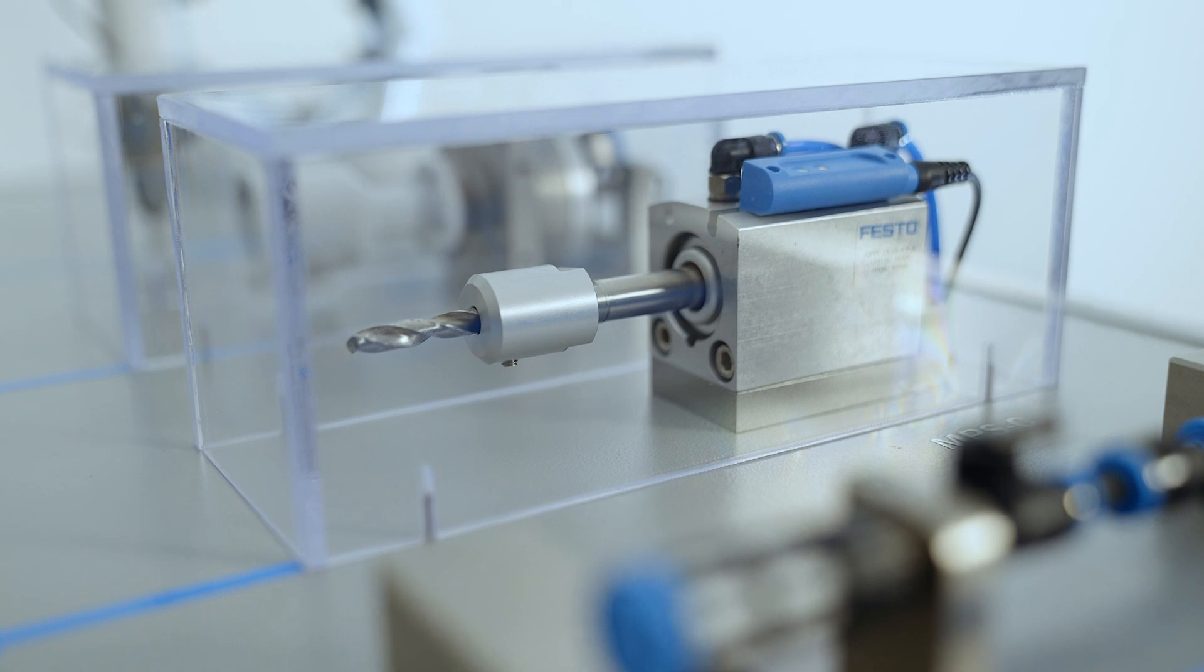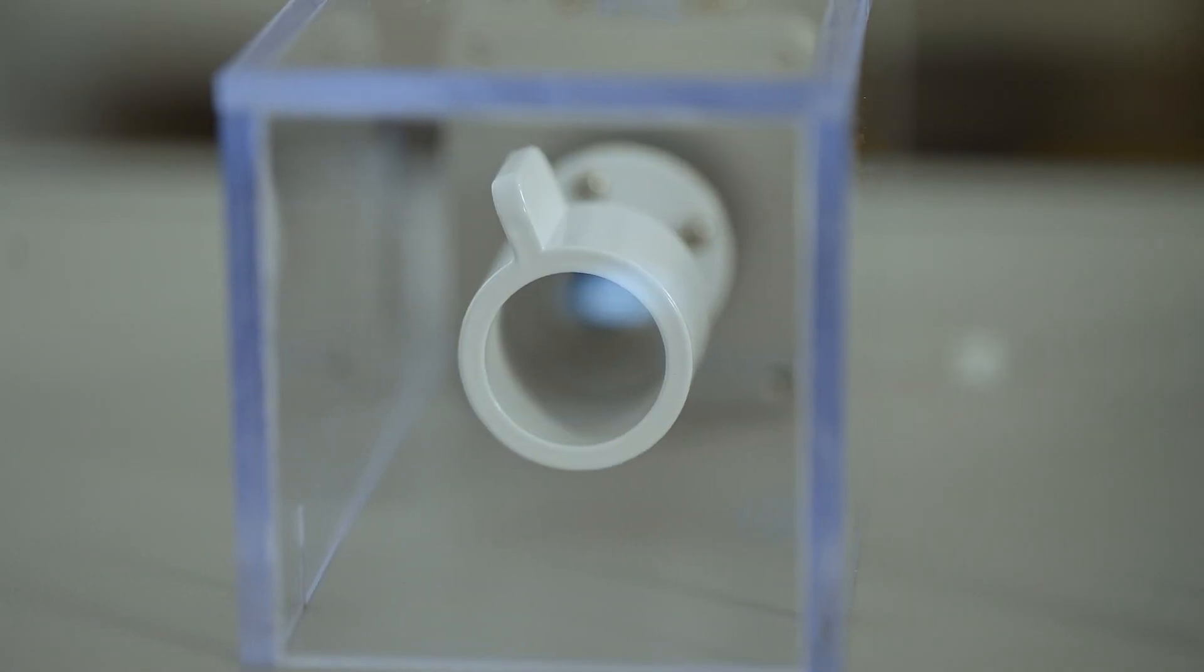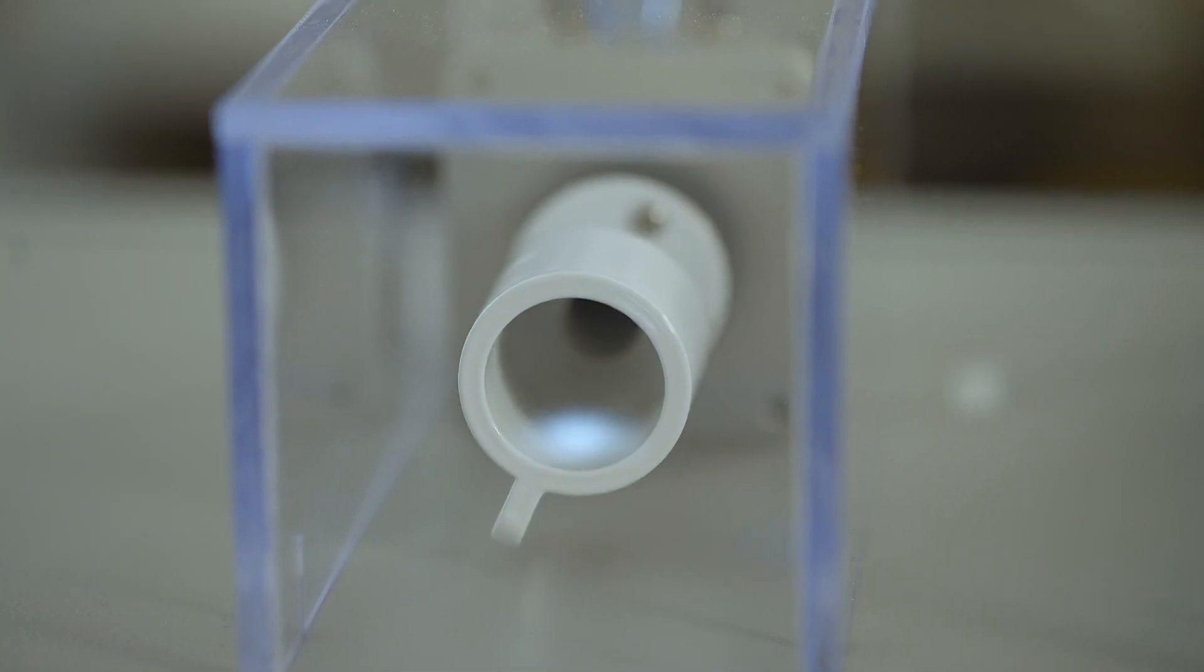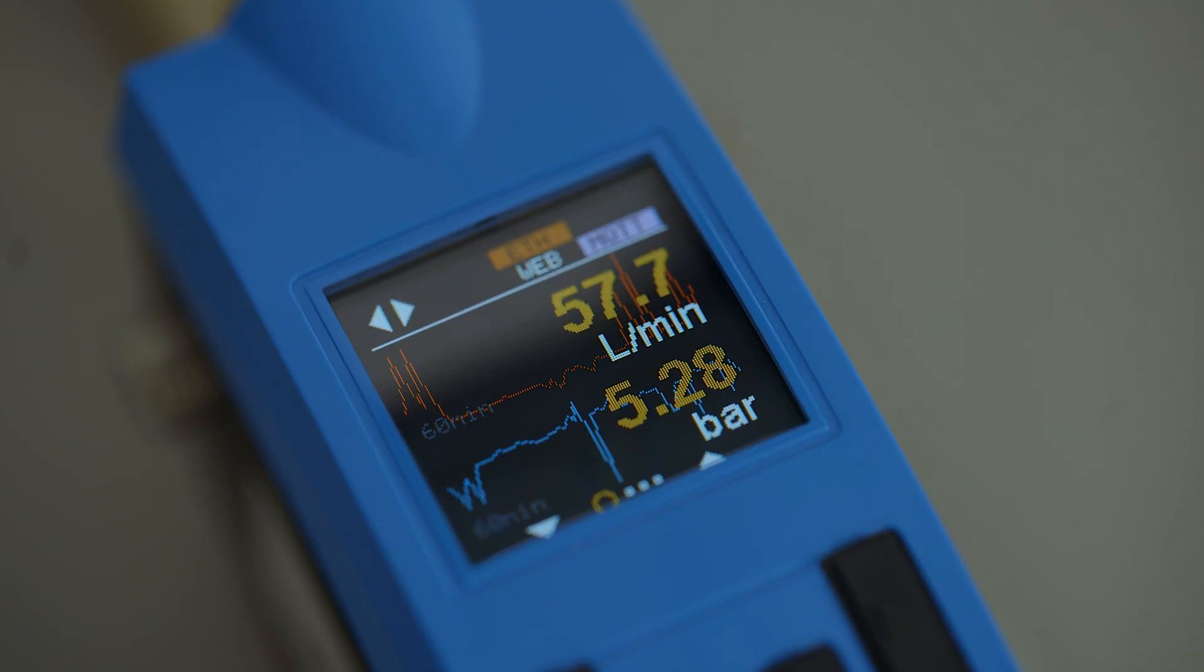The individual consumers on the exhibition models are in constant motion and ensure that the compressed air is consumed. These fluctuations in the volume flow can be traced directly on the display of the FTMG. The exhibition model also offers the possibility of demonstrating large energy consumption or leaks.